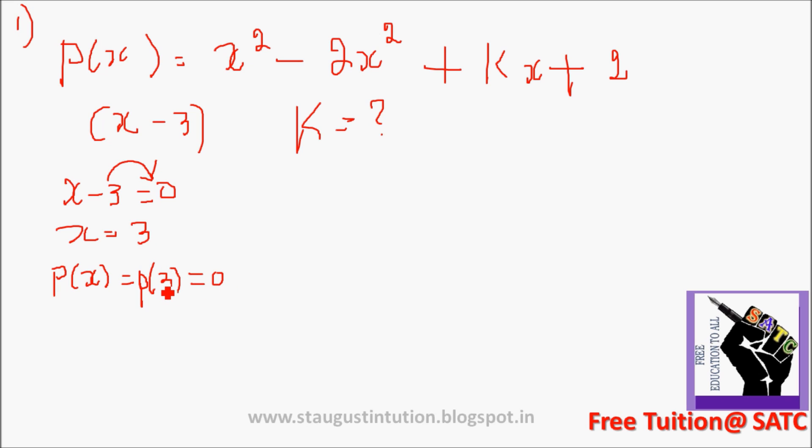P of 3 is equal to 0. Now x is equal to 3 and P of x is equal to P of 3. Then P of 3 equals 3 squared minus 2 into 3 squared plus k into 3 plus 2. If you do this, 3 squared minus 9, this is equal to 0.